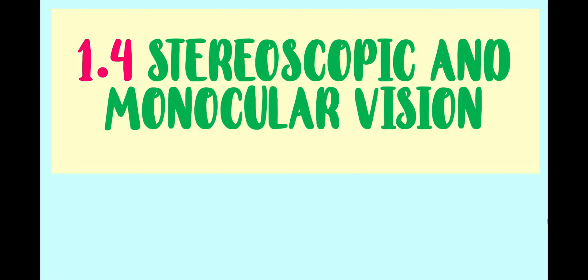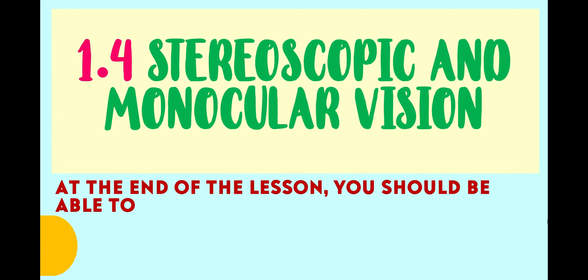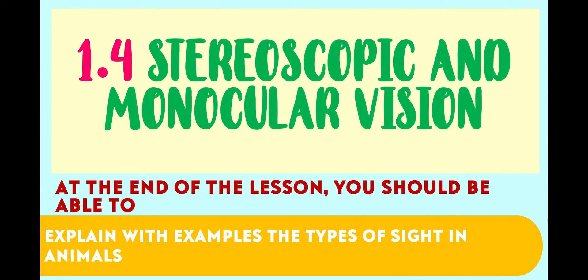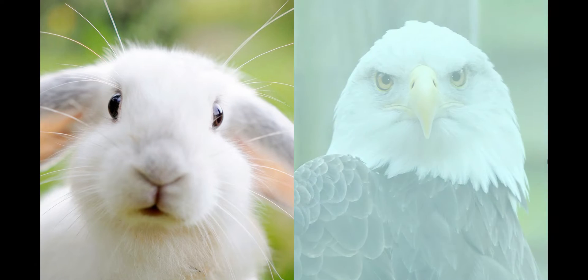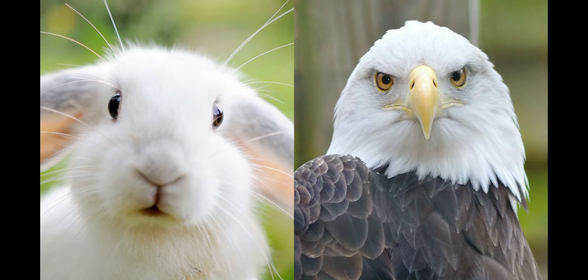In today's lesson we are going to learn about the two types of vision in animals, which are the stereoscopic and monocular vision. At the end of the lesson you should be able to explain, with examples, the types of sight in animals.